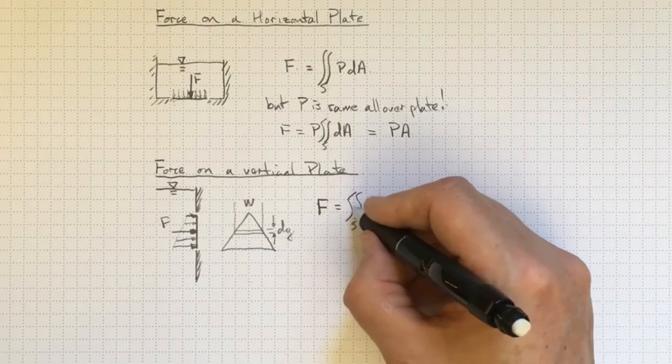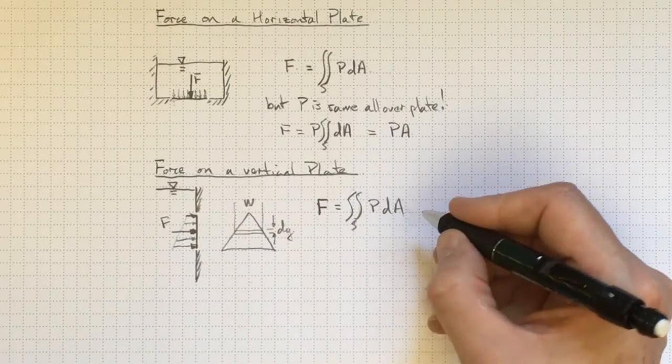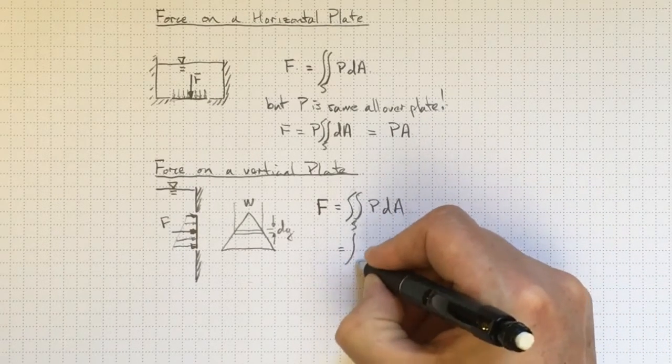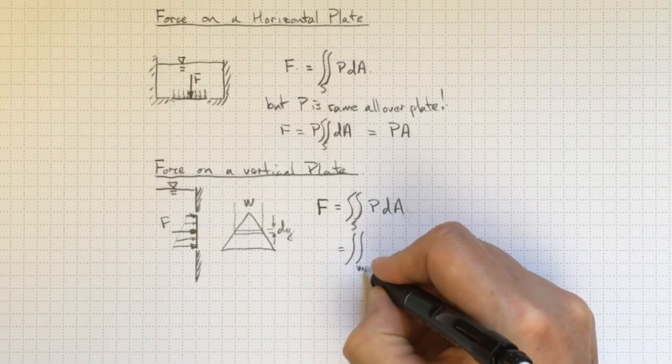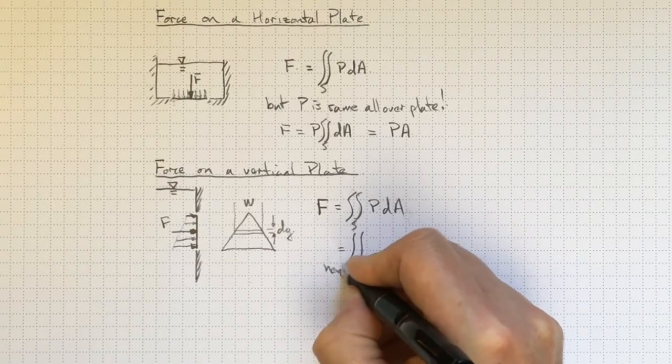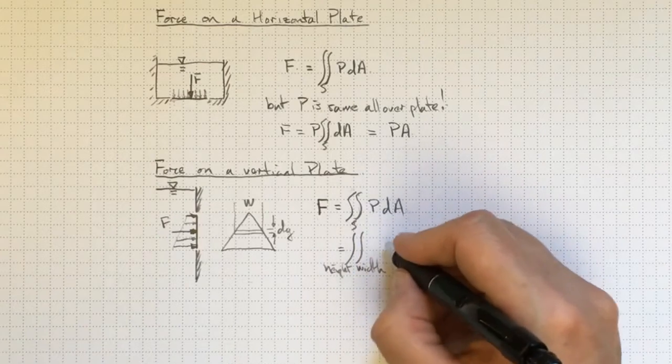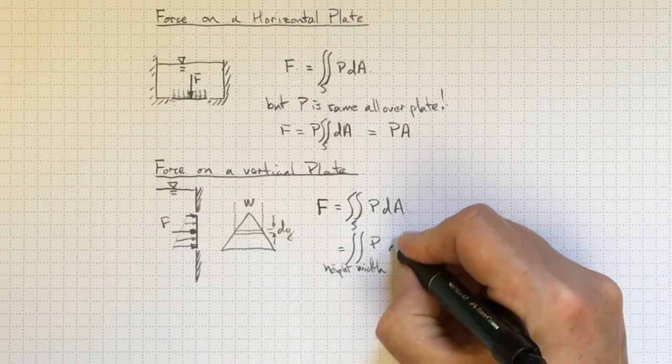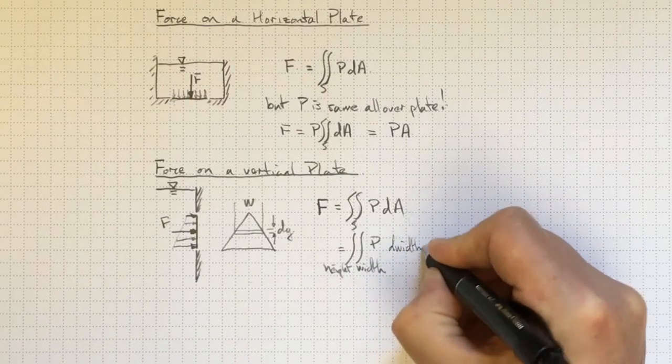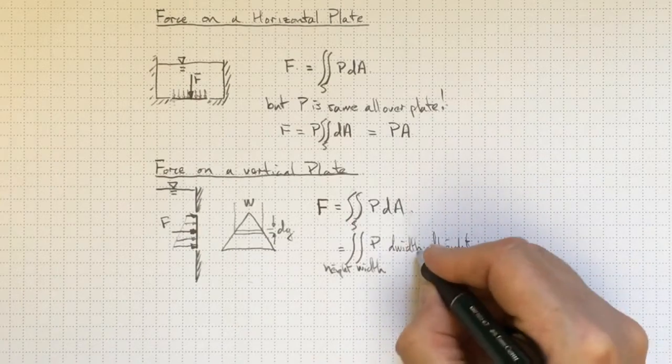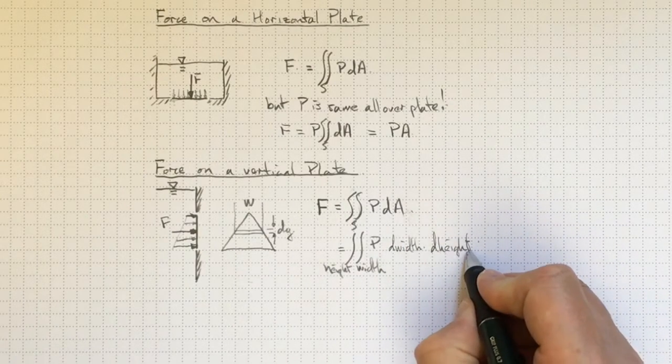And we're going to have to integrate to get over that area. We'll integrate over the height and the width. So we might integrate first over the width and then over the height to take our two dimensional integral down into two separate dimensions of pressure times the change in width. And then the change in height. So that's our dA breaking out into width and height.